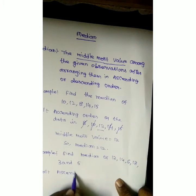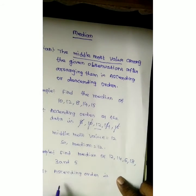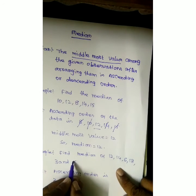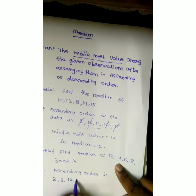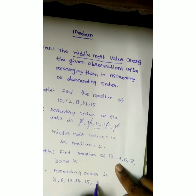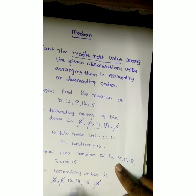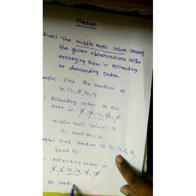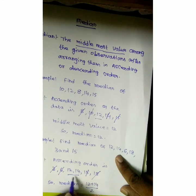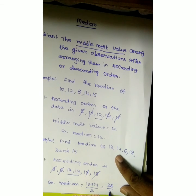Ascending order is: 3, 6, 12, 14, 15, 18. There are 2 middle values. So, median equals the average of these two, that is 12 plus 14 divided by 2. When there are 2 values, you add them and divide by 2 to get the median. 12 plus 14 is 26, and 26 divided by 2 is 13. So, median is equal to 13.